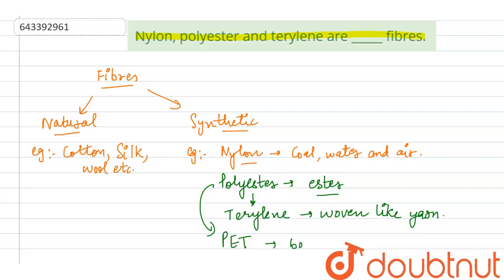Polyester is also used - the common polyester is PET which is used to make bottles and utensils. PET is the full form for polyethylene terephthalate.